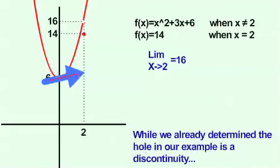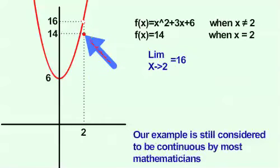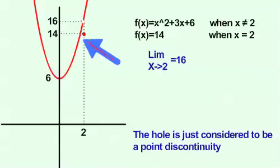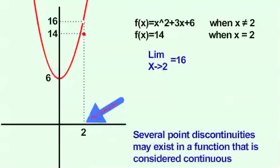While we already determined that the hole in our graph is a discontinuity, our example is still considered to be continuous by most mathematicians. The reason is that except for this very one point, the function is otherwise continuous. The hole in this case is just considered to be a point discontinuity. Several point discontinuities may exist in a function that is otherwise considered to be continuous.